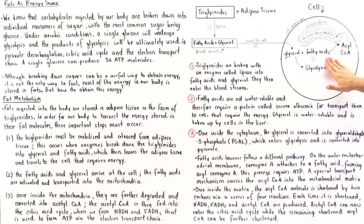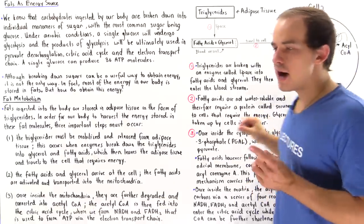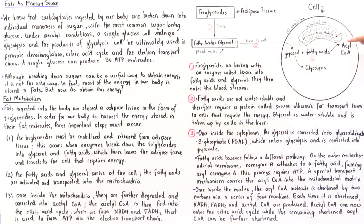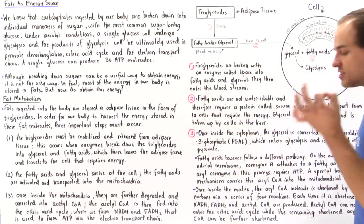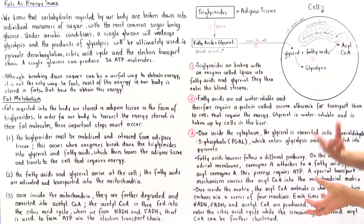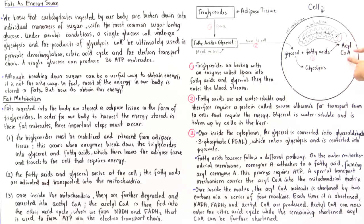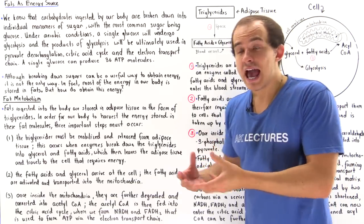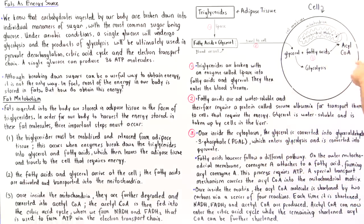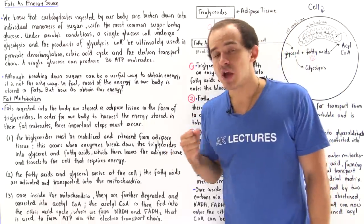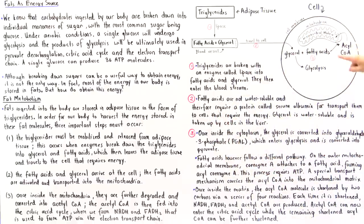The pathway followed by fatty acids is slightly different. Each fatty acid goes to the outer membrane of the mitochondria, where a single ATP molecule and a coenzyme A are used to transform the fatty acid into acyl coenzyme A — essentially a fatty acid attached to a coenzyme A. This activates the fatty acid so it can be transported into the mitochondrial matrix using a special transport mechanism involving a molecule known as carnitine.